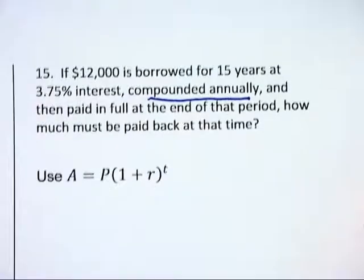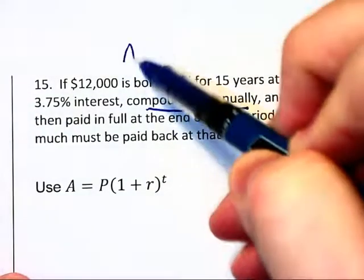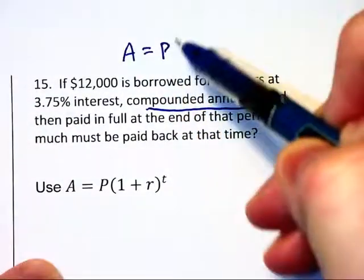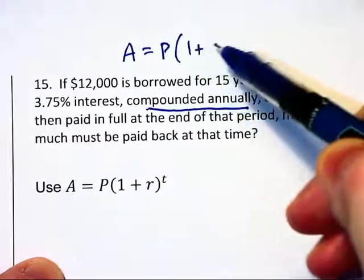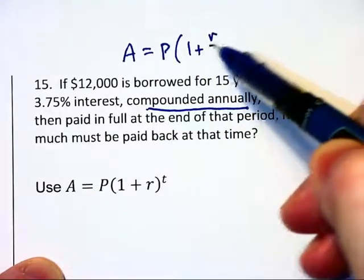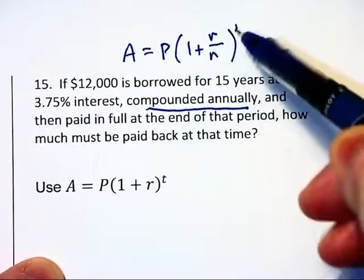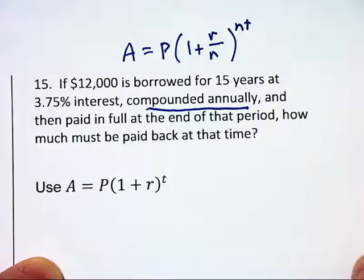Now normally we have the formula A equals P times 1 plus R over N to the NT power. That will be our general formula.